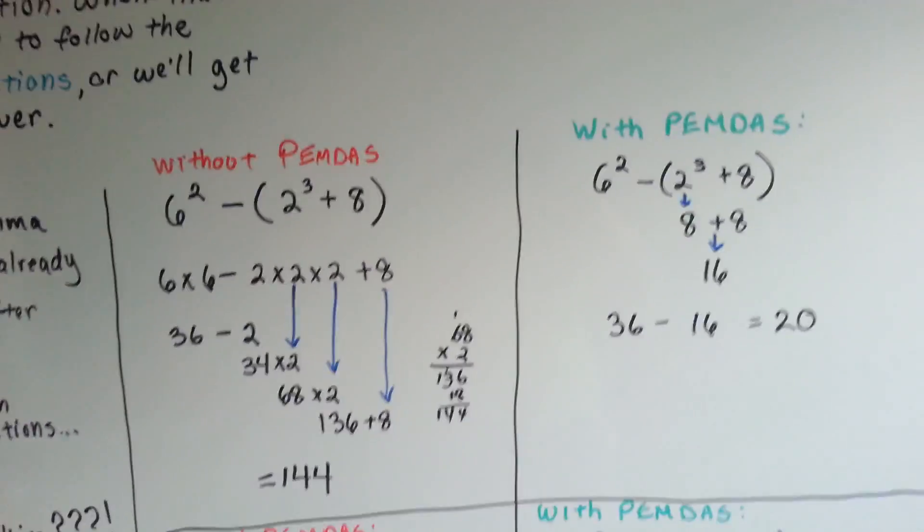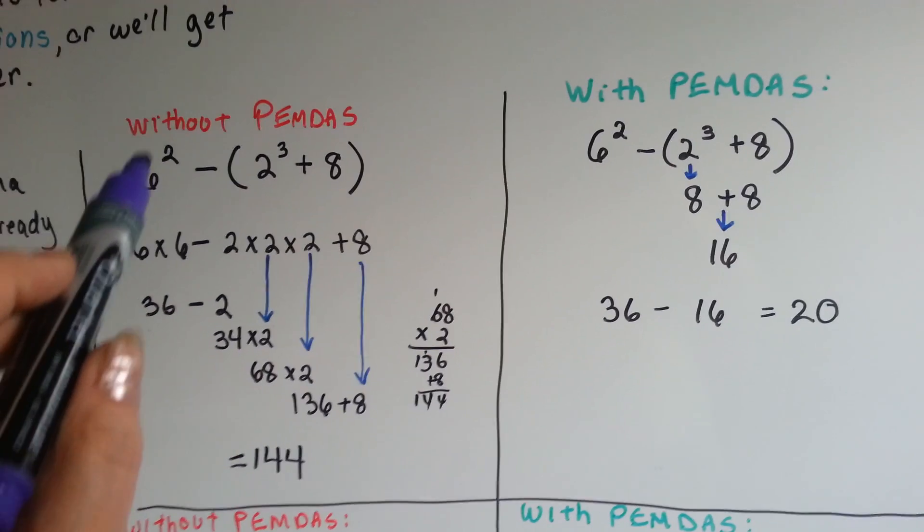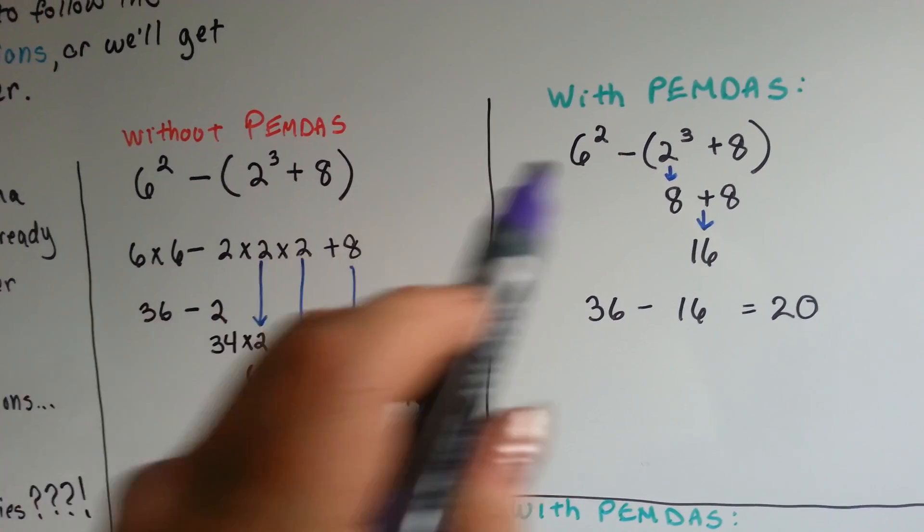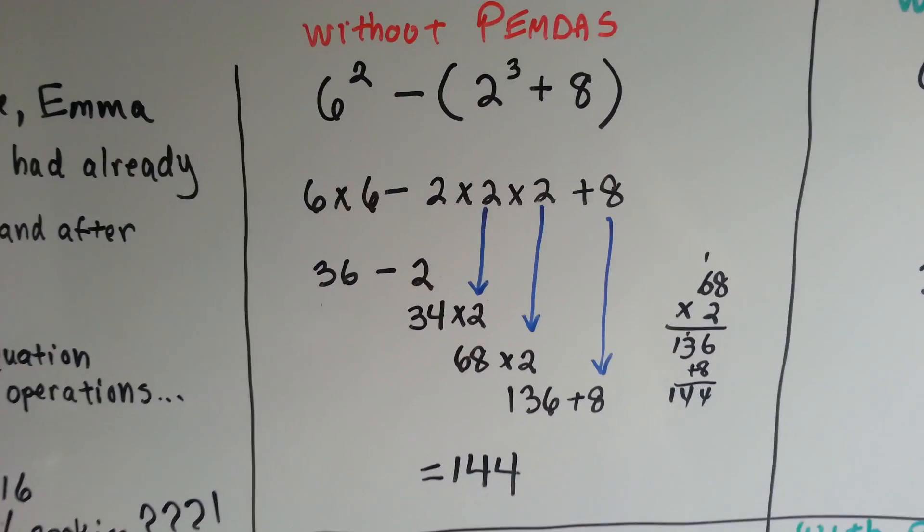So, now I'm going to show you what happens with and without PEMDAS. So, here is the exact same problem. 6 to the second power minus 2 to the third power plus 8. So, here's without PEMDAS. We're just going to go straight across, like most people would.